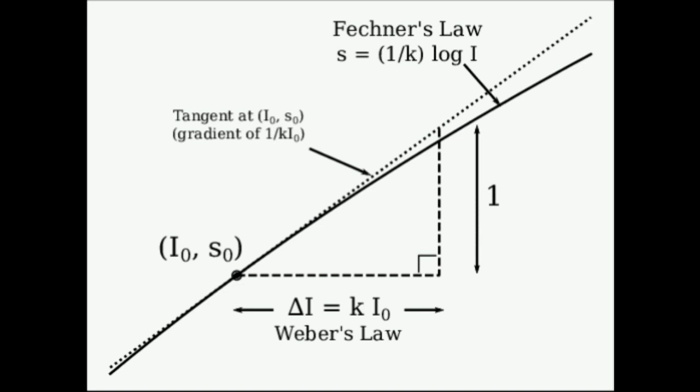What this means is that the perceived change in stimuli is proportional to the initial stimuli. Weber's Law also incorporates the just noticeable difference, JND. This is the smallest change in stimuli that can be perceived. As stated above,